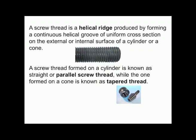In the photo, we can see the helical ridge produced and the cross section is uniform for all the threads. A screw thread formed on a cylinder is known as a straight or parallel screw thread, while the one formed on a cone is known as a tapered thread. Here we can see external tapered thread and internal tapered thread.